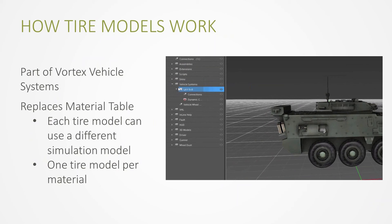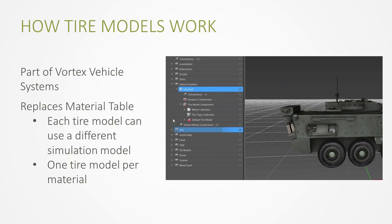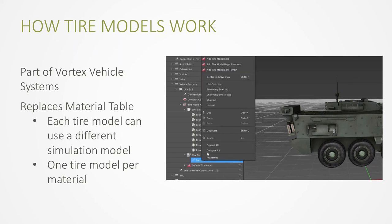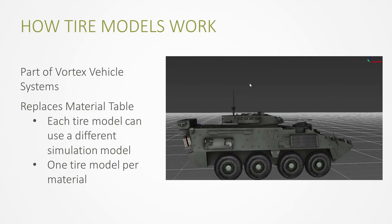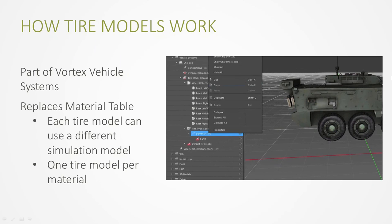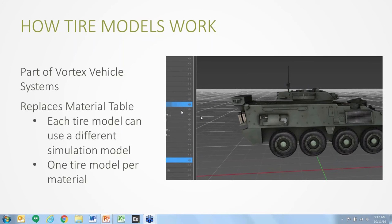Tire models are part of Vortex Vehicle Systems, a module of Vortex Outdoor Solution, replacing the material table. Each tire model you create can use a different simulation model — for example, a hard tire model with Composite Slip, and a separate one for sand driving using a Becker simulation model. All models are independent; you select one tire model per material in your material table. I'm now switching controls to Marc-Alexandre to show tire models in action.